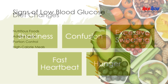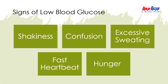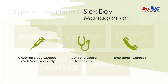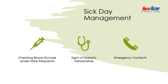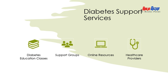It is important to note the signs of low blood glucose levels, such as excessive shakiness, confusion, sweating, hunger, and a fast heartbeat. In order to prevent low blood glucose, it is recommended to follow sick day management plans that involve checking blood glucose levels more frequently and looking out for signs of diabetic ketoacidosis.